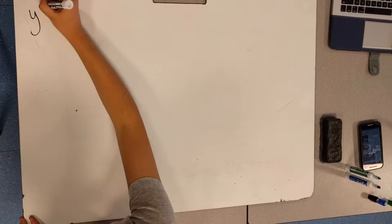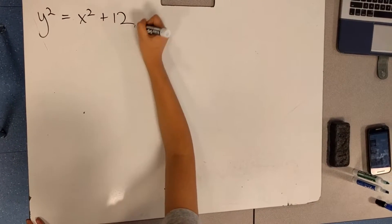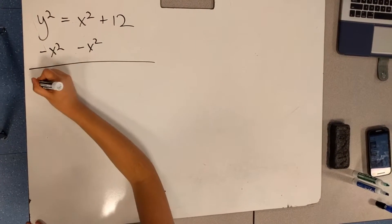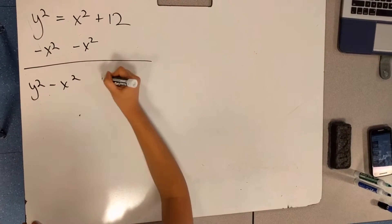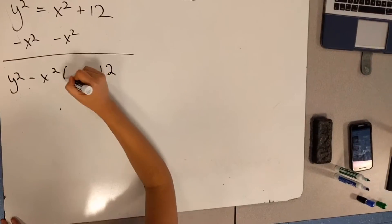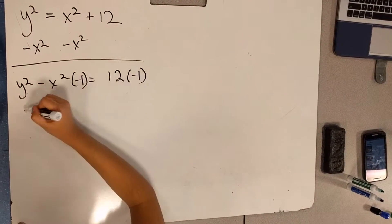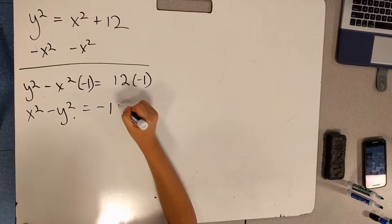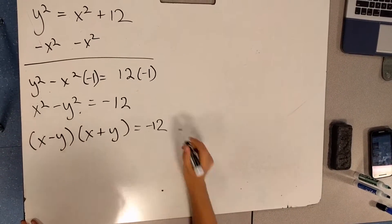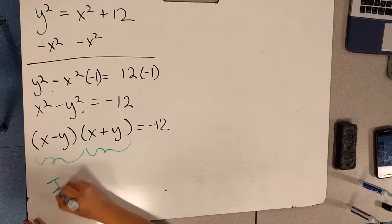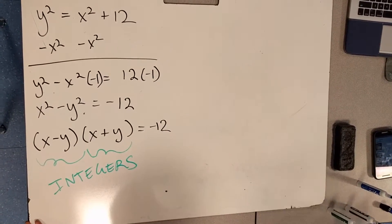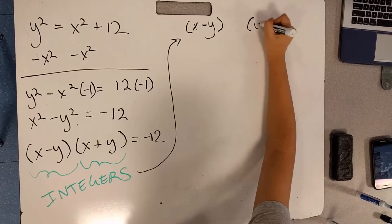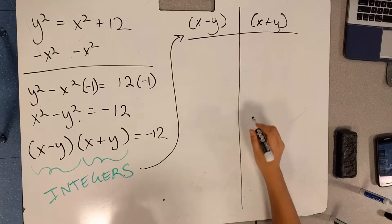Part A asks us to name all the integer pairs that satisfy y-squared equals x-squared plus 12. We can factor this into the equation y-squared minus x-squared equals 12, and then simplify into a difference of squares, which becomes (y-x)(y+x) equals 12. Because x and y are both integers, both y-x and y+x must also be integers. Therefore, we can find all the integer pairs that multiply to make 12.